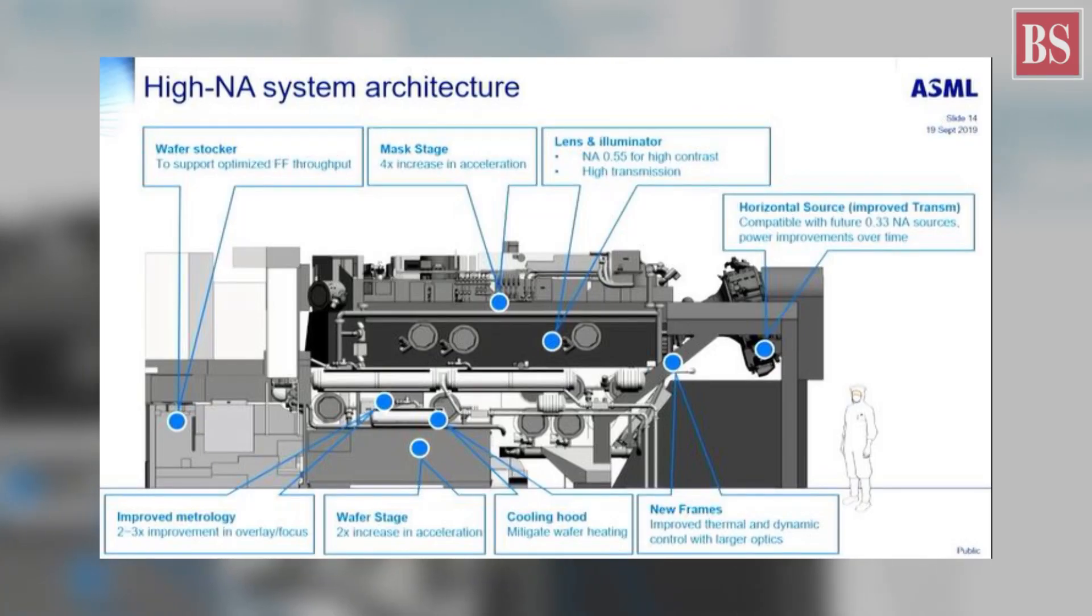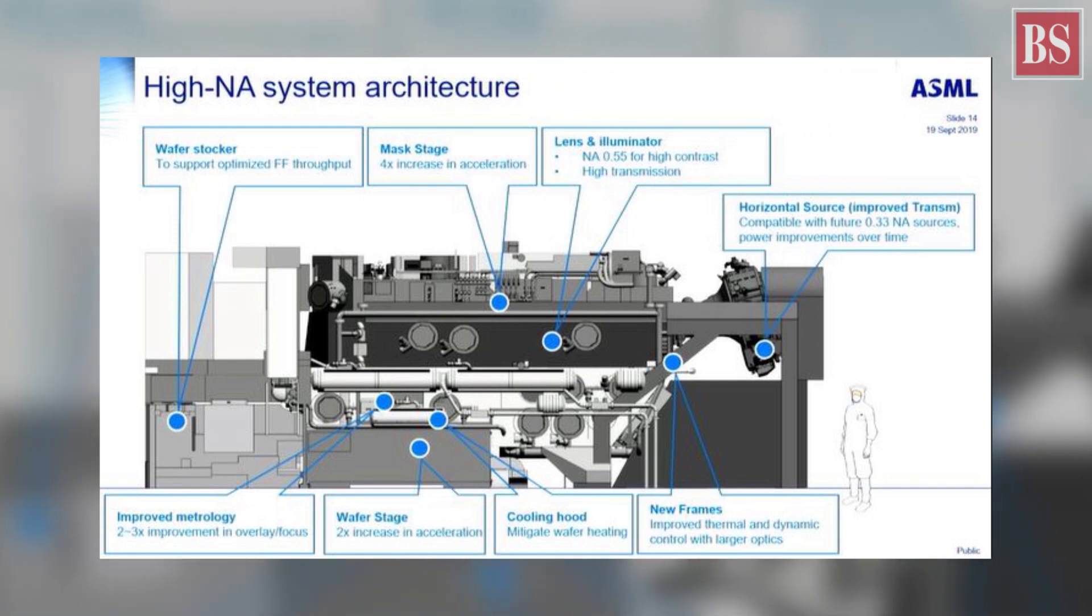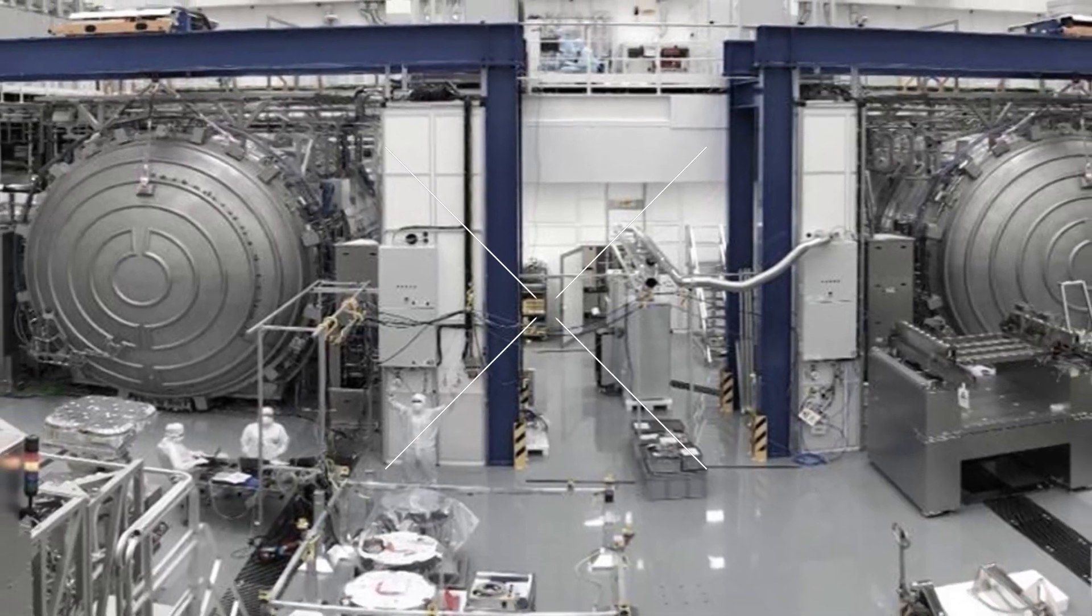ASML's next iteration of the system, known as High-NA EUV machines, will be even larger and cost around $300 million each.